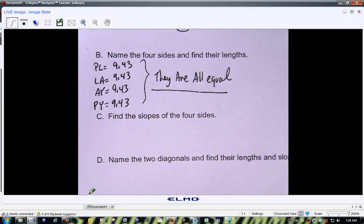So, when we get into the whole analysis part of this, we want to take a look at that and say, all right, well, all four of them are equal. Now let's just find the slopes of the four sides.